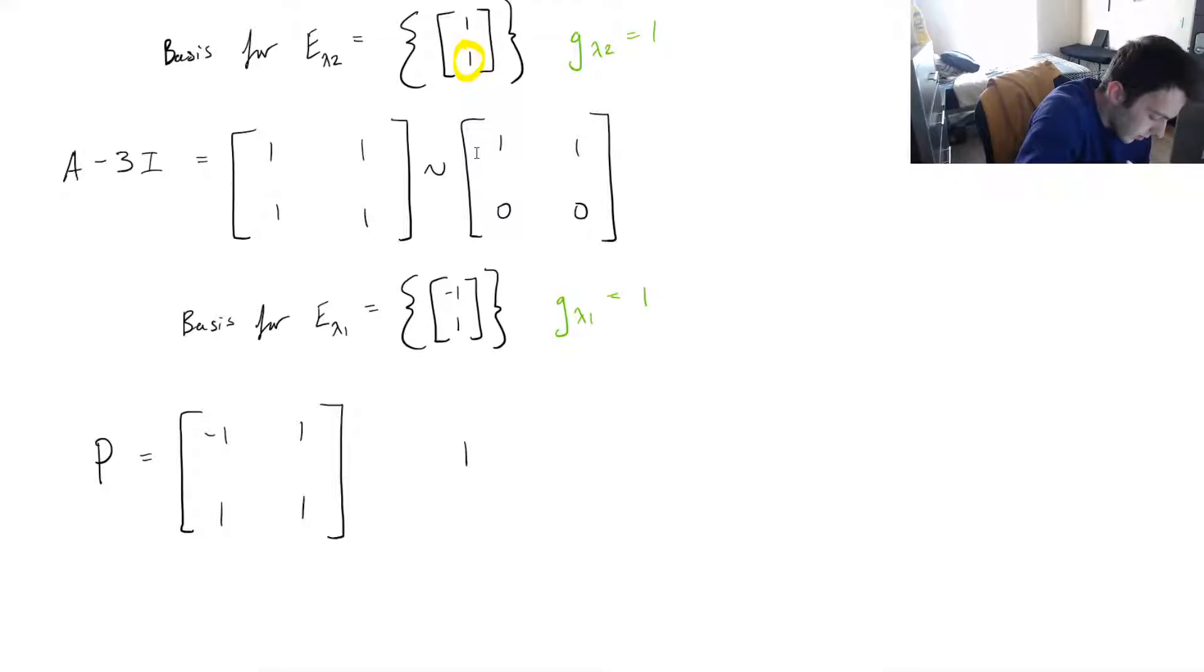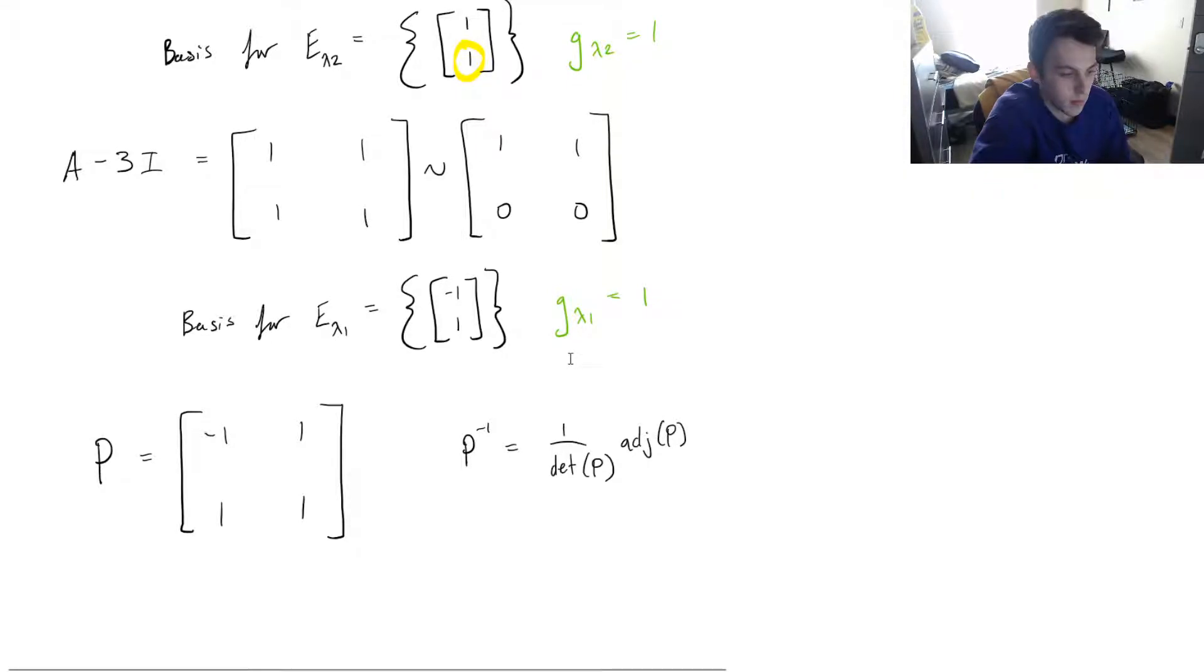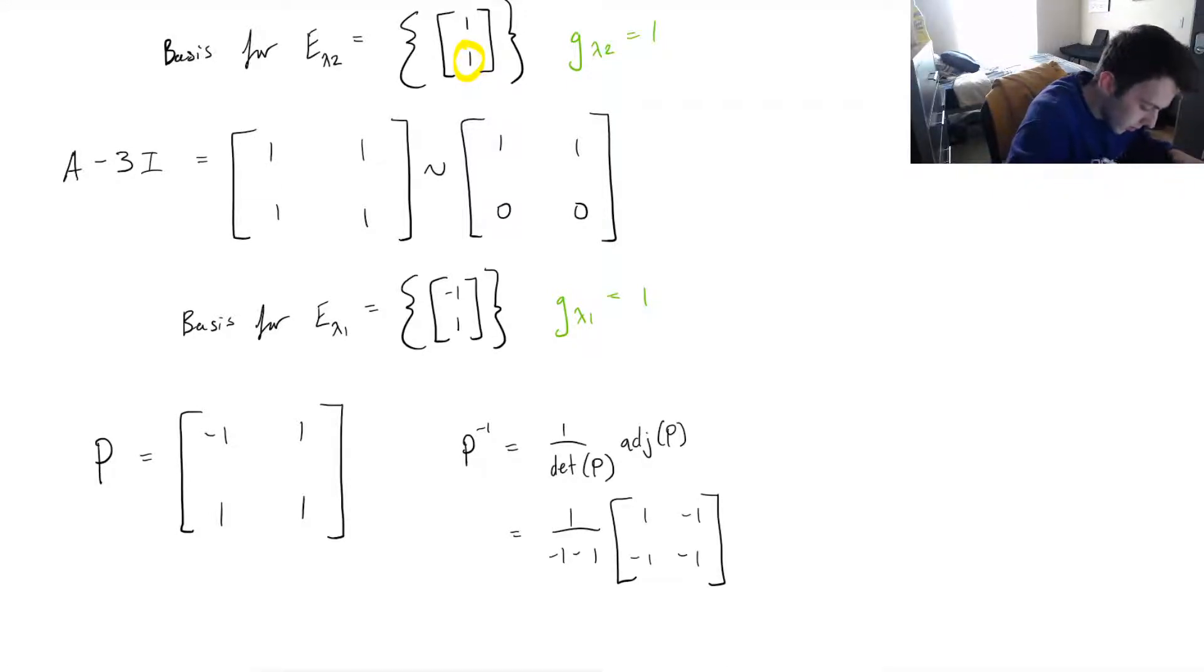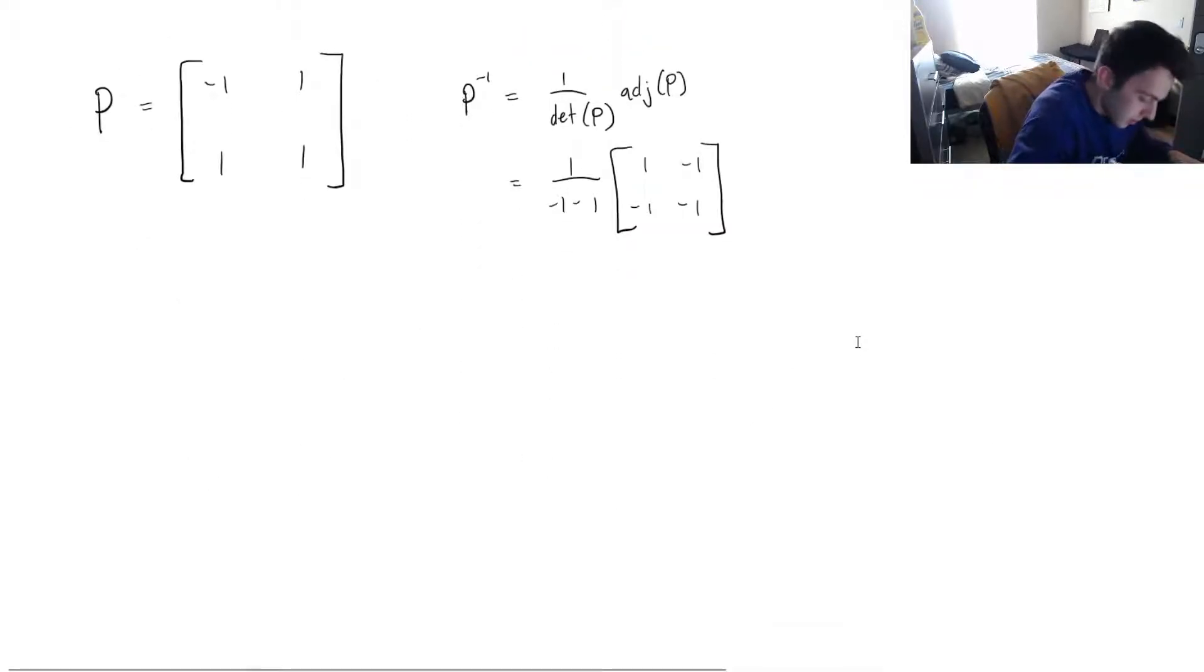I'm going to find the inverse of P now. And we know that the inverse we can write as 1 over determinant of P times the adjugate of P. This is 1 over, and then we've got negative 1 minus 1. The adjugate of a 2 by 2 matrix we can find pretty easily as well. Let me scroll down a little bit. So this will reduce to negative half, half, half, and a half. So I have P and I have P inverse.